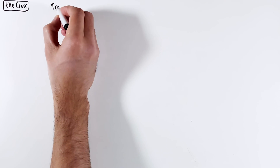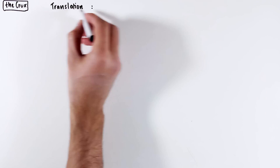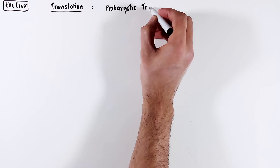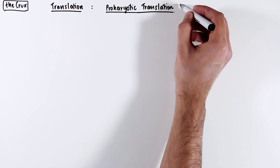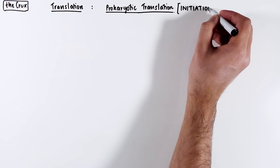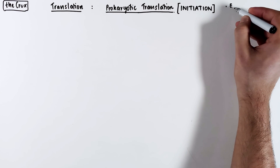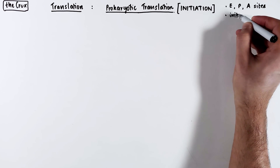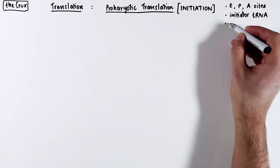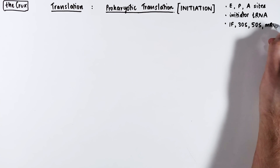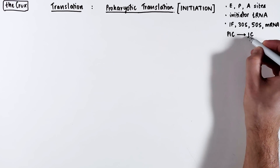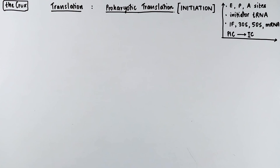In this video, we continue our discussion on translation and start by understanding the first prokaryotic translation step, which is called the initiation. We will talk about the E, P, and A sites, the special initiator tRNA, and how multiple initiation factors along with the ribosome subunits and the mRNA come together in different steps to form the pre-initiation complex. We'll also discuss key transitions that occur in the pre-initiation complex to transition into the initiation complex, which is the last step of initiation.